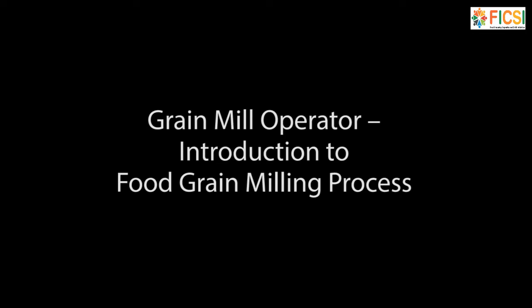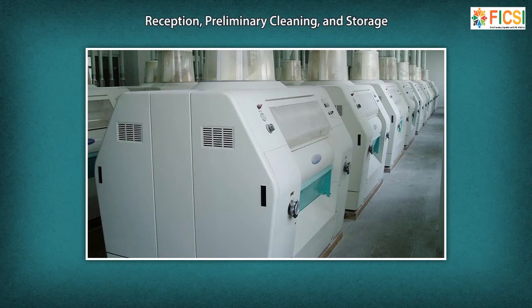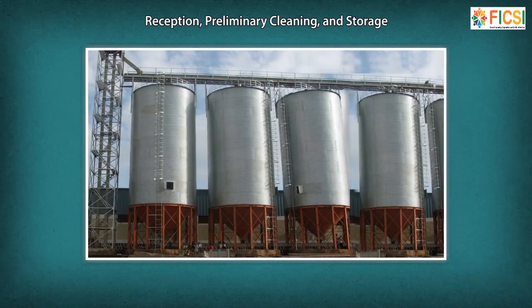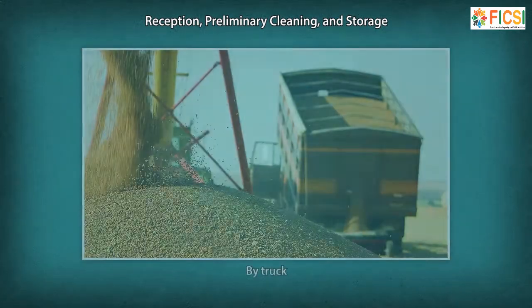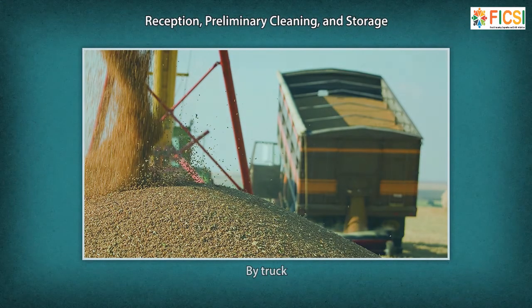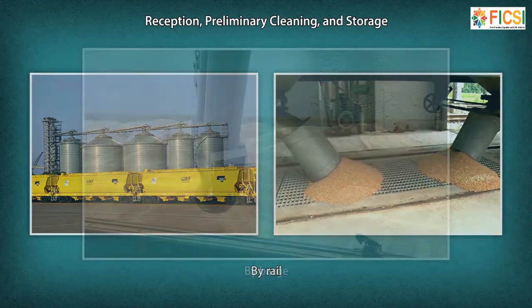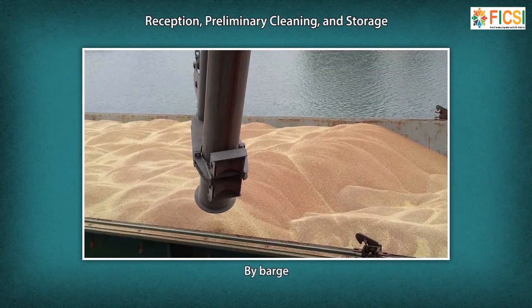Let us see the broad steps involved in the food grain milling process: Reception, Preliminary Cleaning, and Storage. Food grains arrive at mill elevators by truck, rail, barge or ship and are transferred by conveyors to the elevator head house.